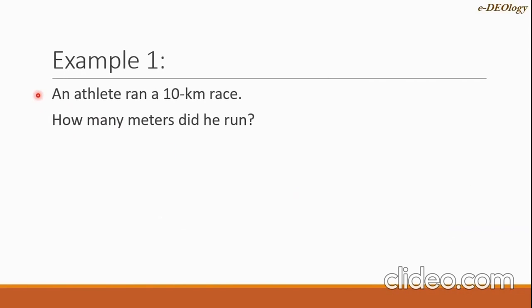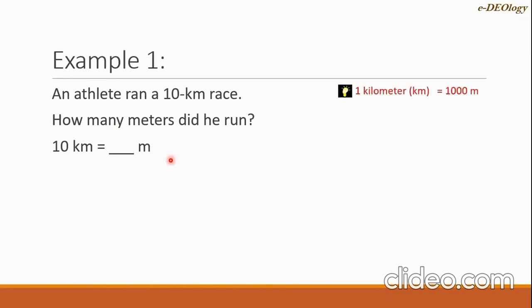Example one: an athlete ran a 10-kilometer race. How many meters did he run? We can write this as: 10 kilometers equals blank meters. We know the formula: one kilometer equals one thousand meters. For our solution, we will multiply by a value equal to one, taken from this formula.